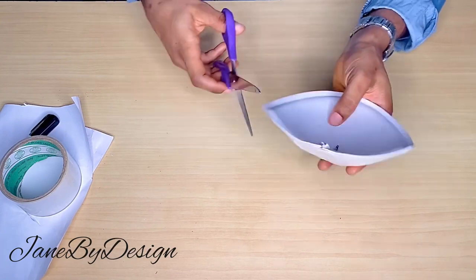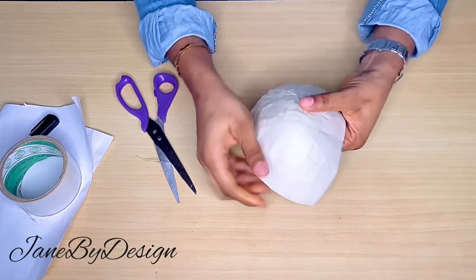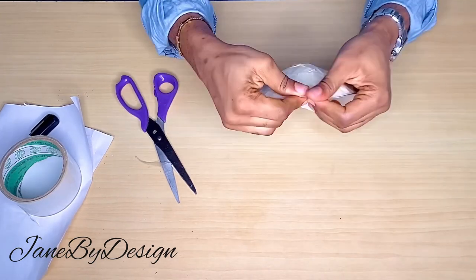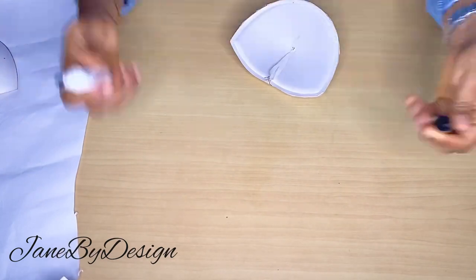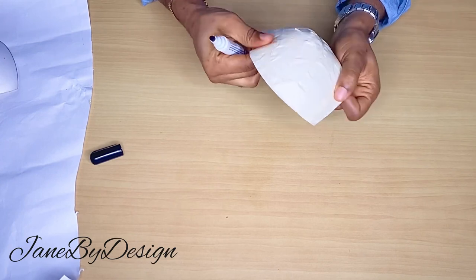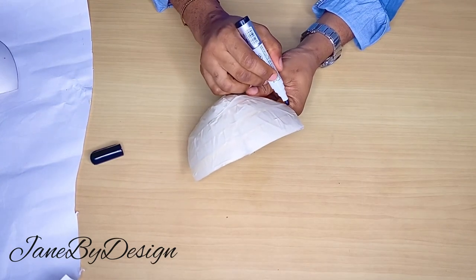At this point, now you can go ahead and draw out the shape of the corset design that you are going for. Or if you want it to be a two-piece, if you want it to be a three-piece corset, you can go ahead and do that. So right here, I have got my marker. Now I'm just going to go ahead and use my free hand to mark out the shape that I want.